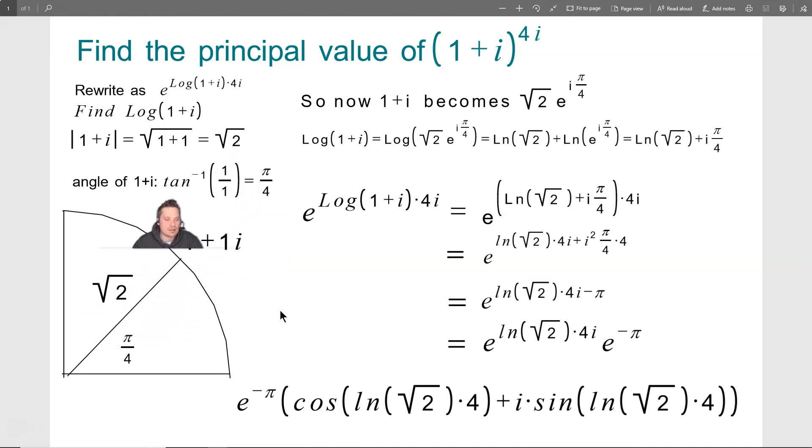Now we also need to find the angle that this number makes. So here, the angle of 1 plus i, I'm going to do the tangent inverse function. And I'm going to write here 1 over 1, which is pi over 4. The tangent inverse of the 1 from the i, which is the top 1, and the 1 from here, which is like the x basically, gives you pi over 4. So the angle is pi over 4.